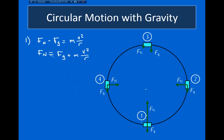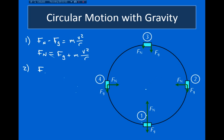At point 2, over here on the right, we can see that the only force pointing inwards towards the center of the circular path is the normal force. The gravitational force just points straight down, so it doesn't affect this at all. This means the normal force is just equal to mv²/r.